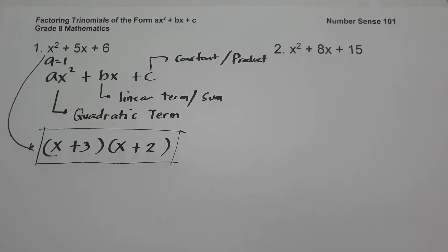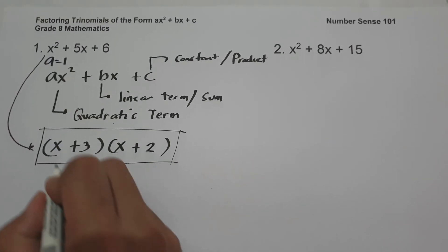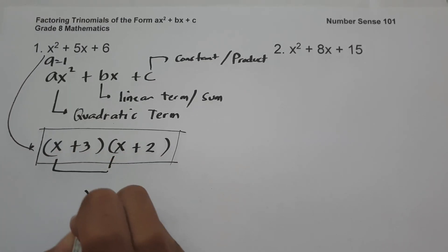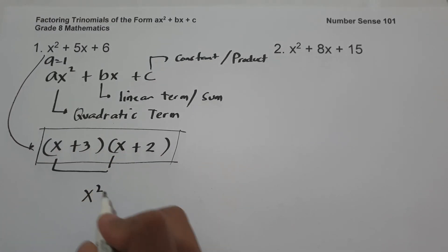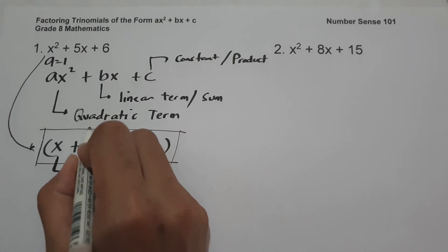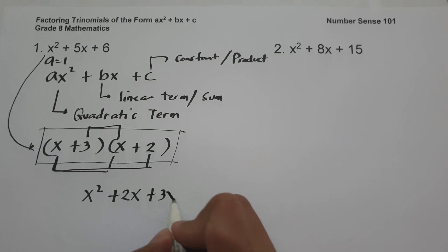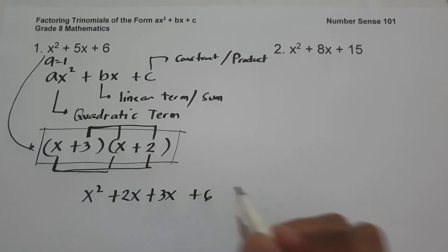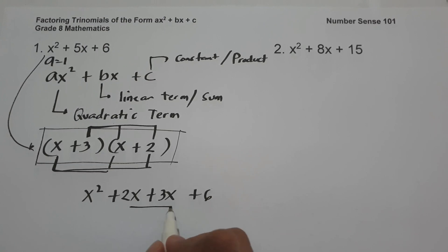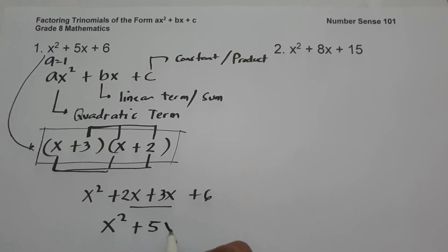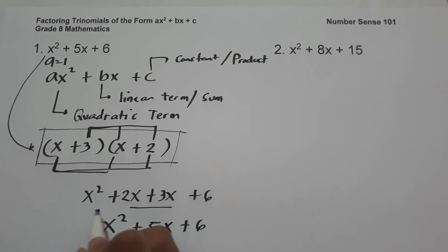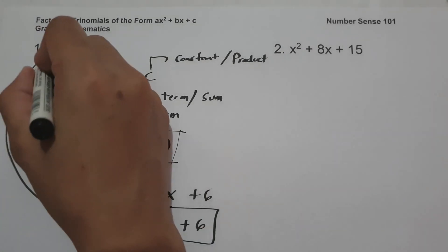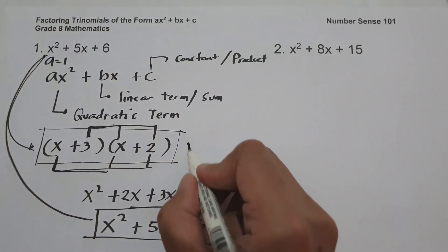If you want to check your answer, let us simply multiply. We have x times x is x squared, x multiplied by 2 is 2x, and 3 times x is 3x, and 3 times 2 is 6. Adding these together gives x squared plus 5x plus 6, which is the same as our given. So this will be our answer.